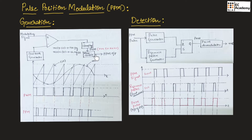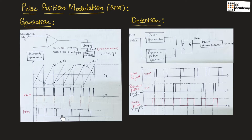The monostable circuit will produce a pulse of fixed duration. That is why the output of the monostable circuit is the PPM signal. As you can observe, it will produce a pulse of fixed duration. This pulse will always appear at the falling edge of the pulse width modulation signal. At each falling edge of the PWM pulse, we have a pulse of fixed duration. The width of the pulse remains constant, so the position of the pulse is varied, and the output signal is known as pulse position modulation.